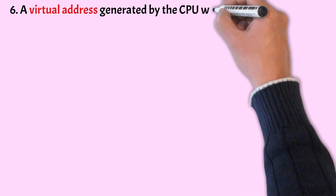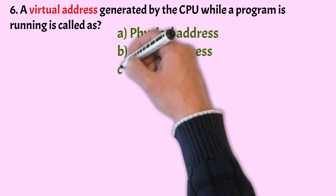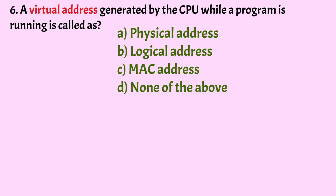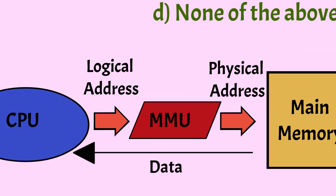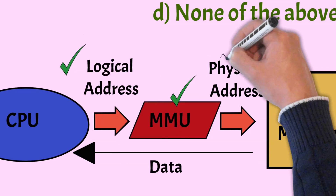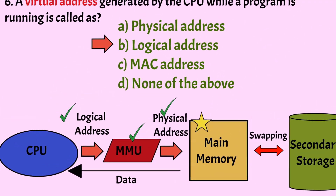A virtual address generated by the CPU while a program is running is called: physical address, logical address, MAC address, or none of the above. The correct answer is Option B, logical address. The physical address is the actual address of data inside memory. The user never deals with physical addresses directly; instead, the CPU generates a virtual or logical address. The MMU (Memory Management Unit) translates logical addresses to physical addresses corresponding to RAM or main memory. A logical address doesn't exist physically — it is only used as a reference to access the physical address.